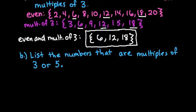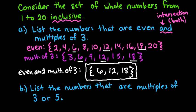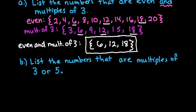Let's look at another example. We're still using the same numbers, 1 through 20 inclusive, but this time we want to list the numbers that are multiples of 3 or multiples of 5. 'Or' is known as the union of two sets, and the union of two sets is putting those two sets together.